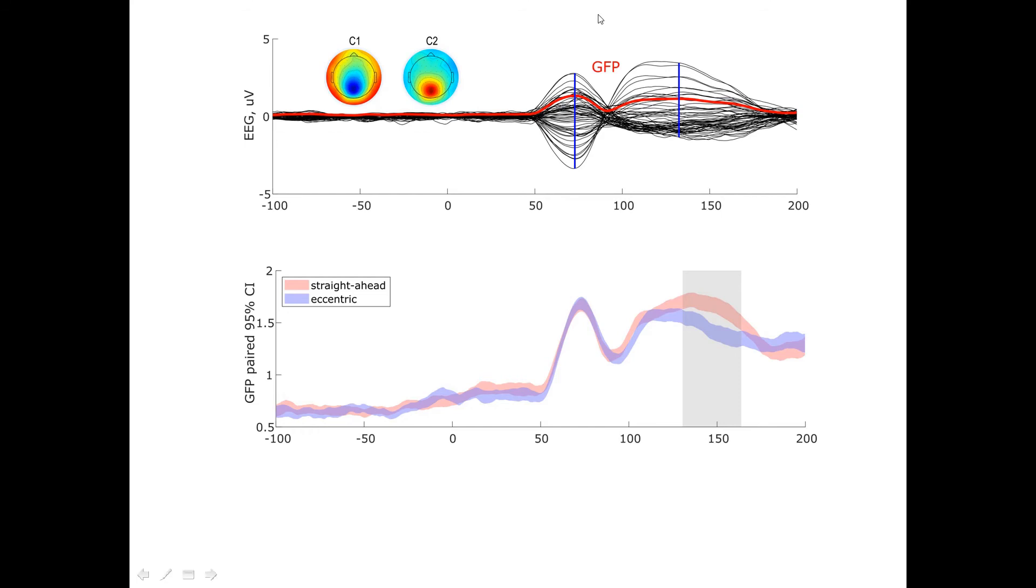But this GFP, global field power matrix, can be with equal use achieved at the individual level. Individual summary statistics. We have a matrix of, I don't know, a number of time points, 64 electrodes. And we compute standard deviation for each time point, for each individual. So we get this GFP curve for one condition, for the other condition, and for each individual, for each subject.